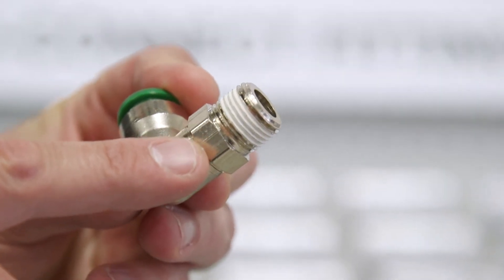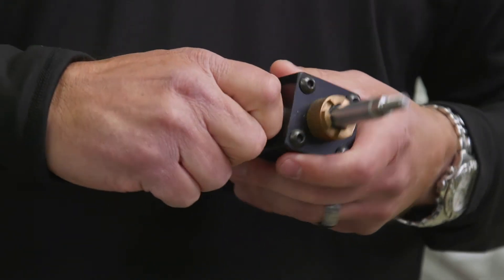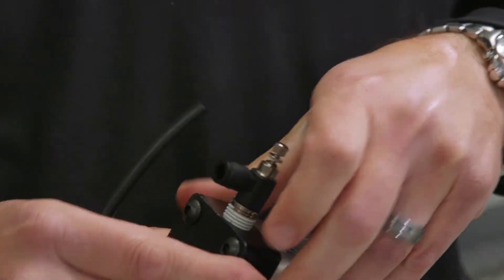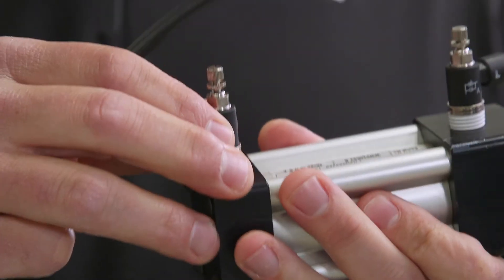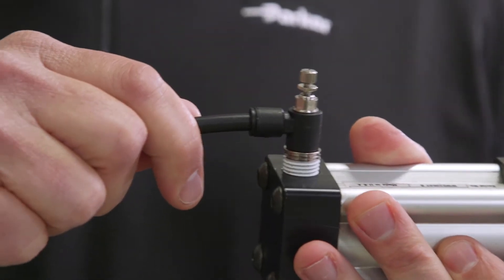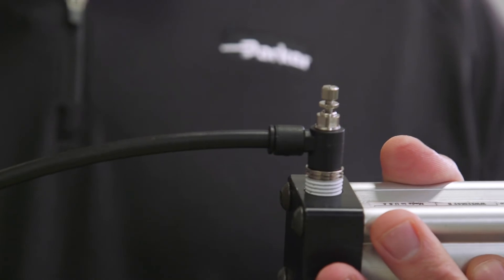We have pre-applied thread sealant as you thread that in to make sure you get a very good seal on the thread. For the tube connection, with these being push-to-connect fittings, it's just a simple connection as far as pushing the tube into the fitting and your cylinder connection would be done.